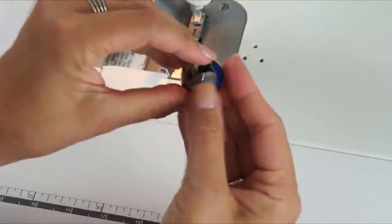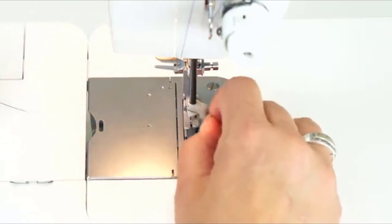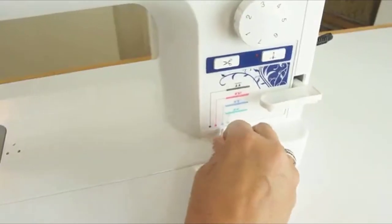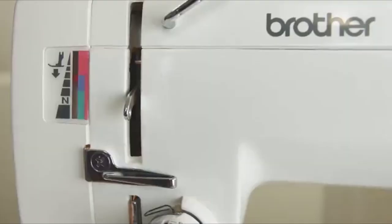Loading the bobbin and threading the machine is easy, plus the DZ1500F includes a convenient color-coded thread pressure dial for consistent, high-quality stitching.